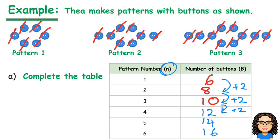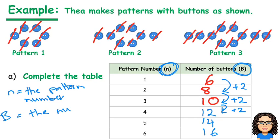And notice that we've got in the table one has got a variable n, and the other's got the variable B. That's going to help us identify on our graph what to do, and what labels and definitions. They're saying n is the pattern number, and B is the number of buttons. It's always important to have those variables defined.